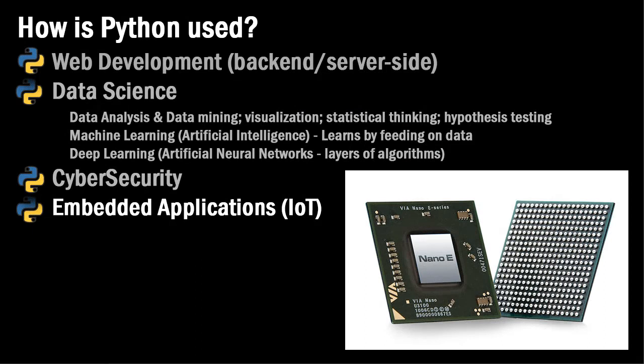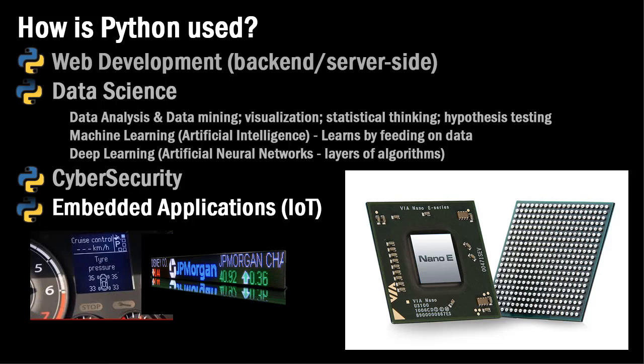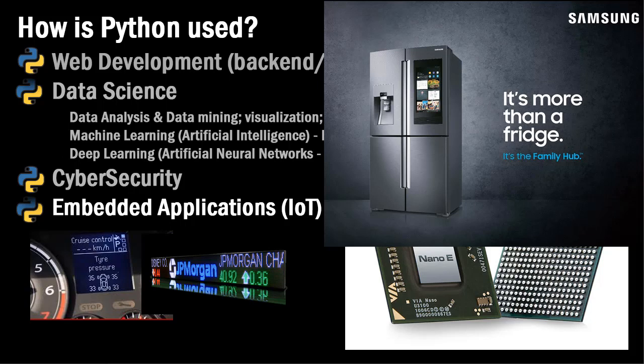A fourth area that Python is used in is embedded applications. IoT stands for Internet of Things — the idea that objects can have embedded chips in them that communicate with other objects. For example, a car that shows the tire pressure of your tires, LED boards driven by embedded chips, Christmas light displays that can be animated using embedded applications. Animatronics is another area. Samsung has a refrigerator with a display that can communicate to your cell phone about your grocery list. Smart homes is another embedded application use of Python, where you can control your thermostat or your lights via your smartphone.